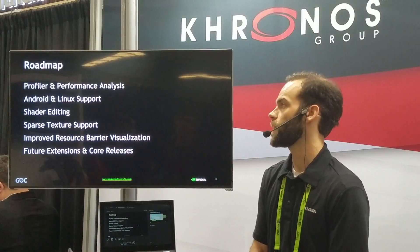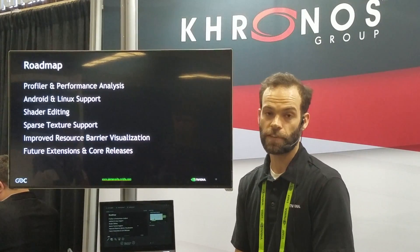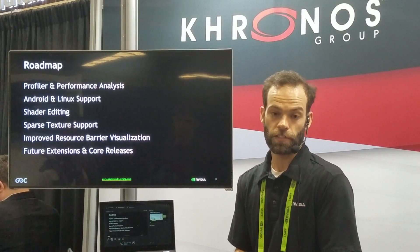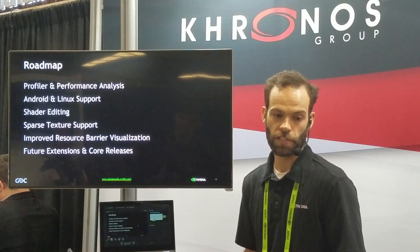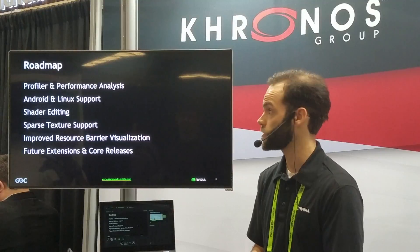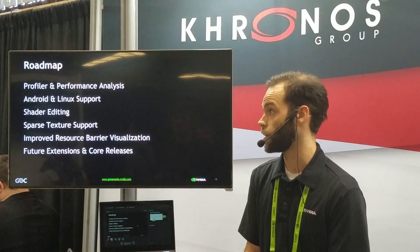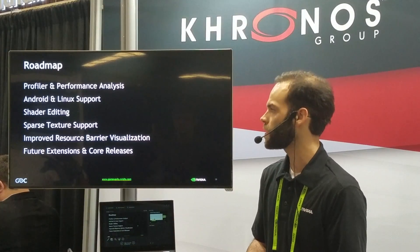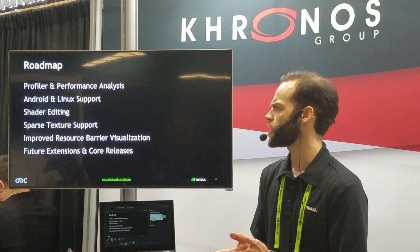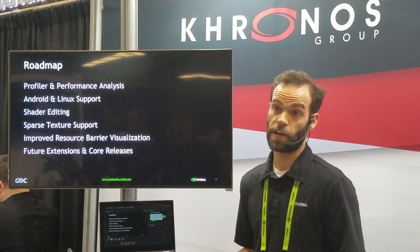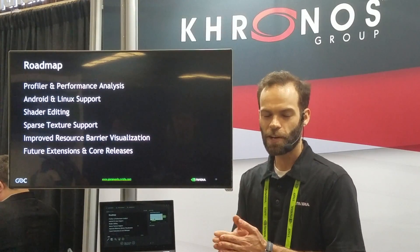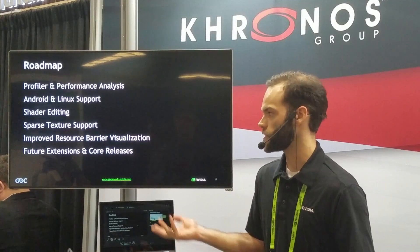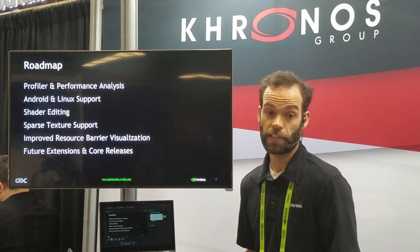On our roadmap: we want to add profiling and performance analysis, which we have for all other graphics APIs and Vulkan is next on the list — low-level information unique to NVIDIA hardware, like why is my draw cost low, utilization, etc. We also want to add Android and Linux support. Shader editing is something we want to add. Sparse texture support needs cleanup. And we've been brainstorming how to better visualize resource barriers, which is a Vulkan-unique problem. We also want to support future extensions and any core releases that come out.